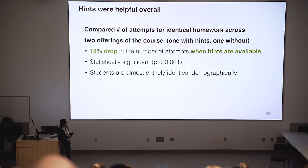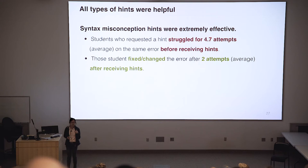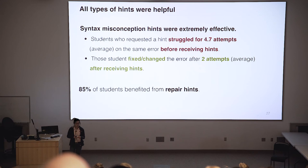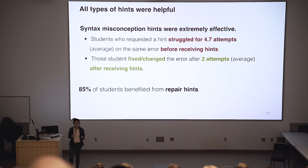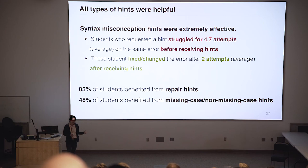What about if we look at each type of hint separately? For syntactic misconception, we looked at incidents where a student asked for a hint. On average, students struggled with that particular syntax error for about 4.7 attempts and then asked for a hint, and then only took about 2 attempts after that to fix the error — which seems very promising. For the repair and missing case hints, we looked at a sample of students that received repair hints and subjectively evaluated if the hint contributed to the student's final solution. We found that about 85% of the time, repair hints seem to contribute to the student's solution, and about 48% of the time, the missing case hint seems to benefit the student. Overall, we are pretty happy that all kinds of hints do affect and help students complete the assignment.